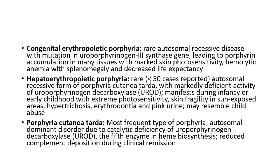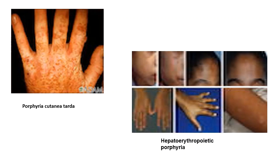Porphyria cutanea tarda is the most frequent type of porphyria. It is an autosomal dominant disorder due to catalytic deficiency of uroporphyrinogen decarboxylase, the fifth enzyme in heme biosynthesis, and there is reduced complement deposition during clinical remission. Looking into the pictures of porphyria cutanea tarda, as you can see on the back of the hand, these are the PCT features, and the below picture shows the hepatoerythropoietic type of porphyria clinical features on the face and also on the hands.